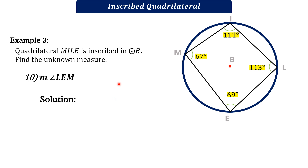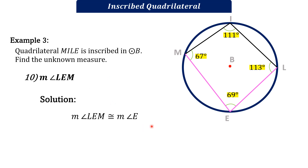We are at the last item, number 10: find the measure of angle LEM. Angle LEM is also known as angle MEL, which is the same as angle E. From our previous solutions, angle E is equivalent to 69 degrees. Since we are referring to the same angle, angle LEM equals 69 degrees.